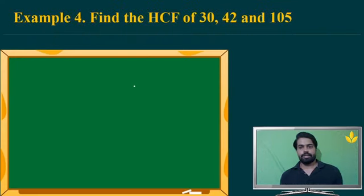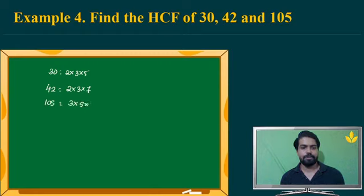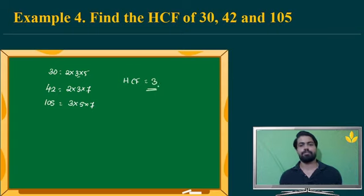Another example: find the HCF of 30, 42, and 105. We write 30 = 2 × 3 × 5, and 42 = 2 × 3 × 7, and 105 = 3 × 5 × 7. The factor common to all three is 3, so the HCF of these numbers is simply 3.